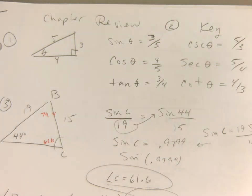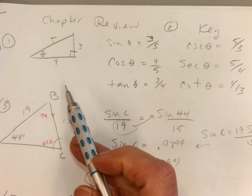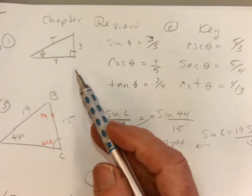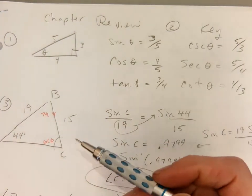Okay, here is the review on trigonometry. So on number one, here's our triangle. It's a 3, 4, 5 right triangle.